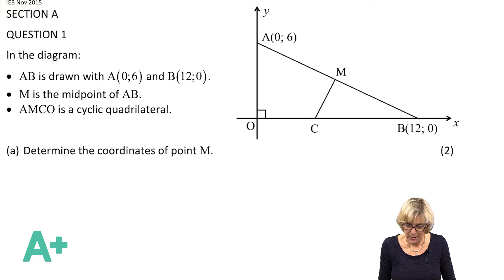Let's read: AB is drawn with A(0,6), which we saw, B is (12,0), and M is the midpoint of AB. Then it tells us a very important thing - it says that AMCO is a cyclic quad.